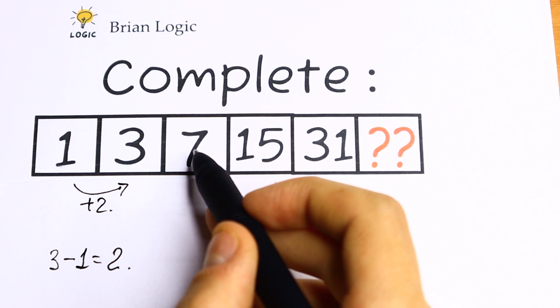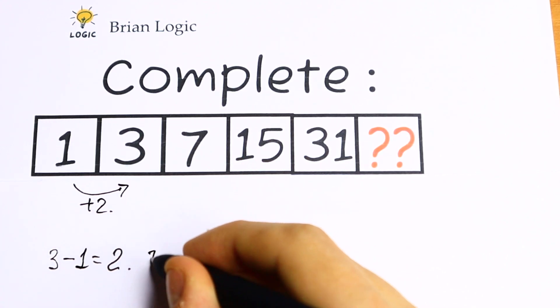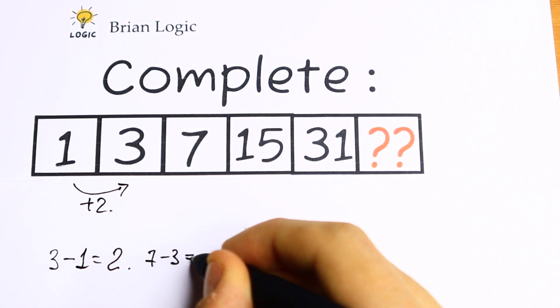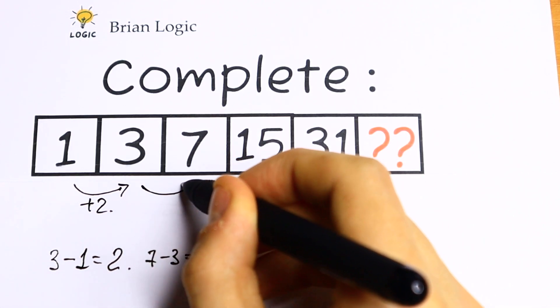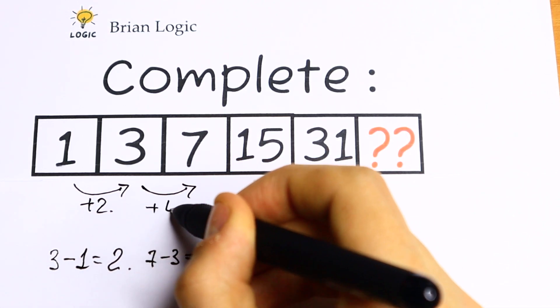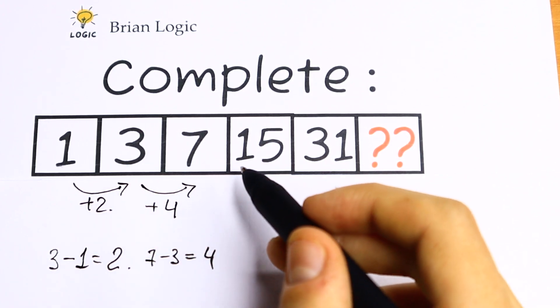Take a look. If we subtract the second number from the third, 7 minus 3 equals 4. So we need to add 4 to the second number to get the third one.